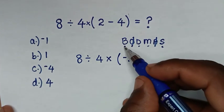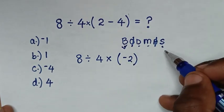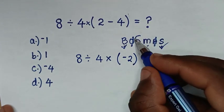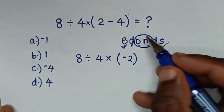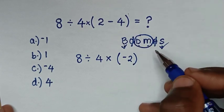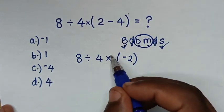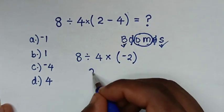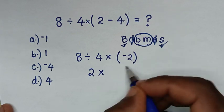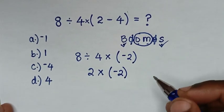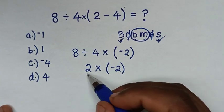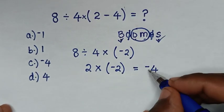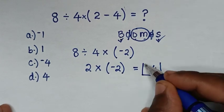Then after we deal with this bracket, we deal with division and multiplication according to what starts first. Here it starts with division then multiplication. From division: 8 divided by 4 is 2. Then times bracket negative 2. So 2 times negative 2 is equal to negative 4. Therefore, this is our final answer.